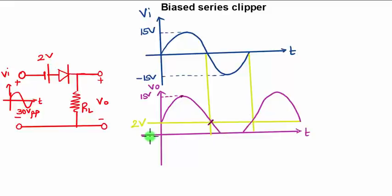Finally the waveform, when you look at it, you are getting from 2 volts you will get output till 15 volts, then till 2 volts, then till minus 2 volts you will get the output. Then after minus 2 you won't get any output. This is how you will get the waveform for the biased series clipper circuit as shown in the diagram.